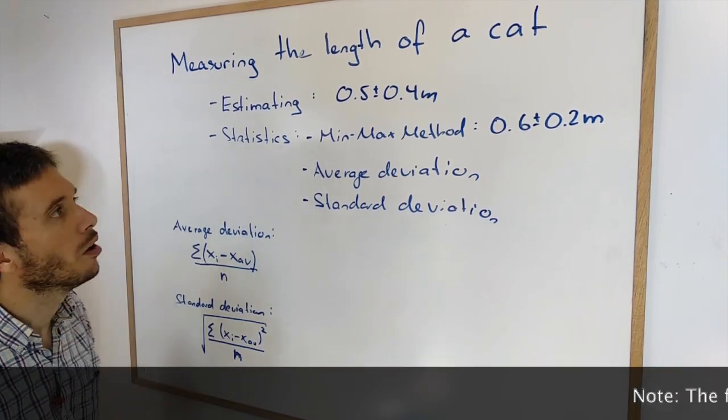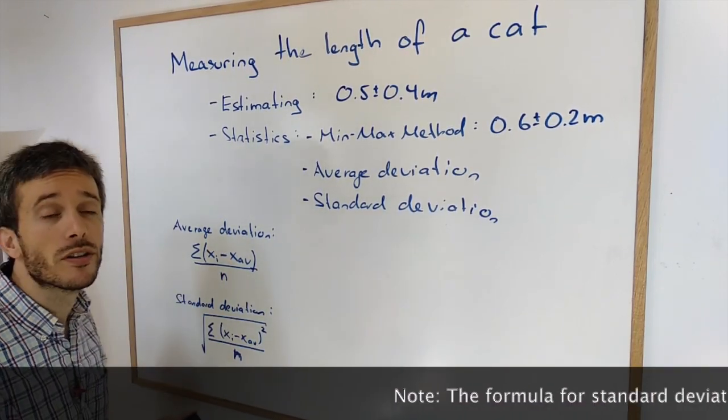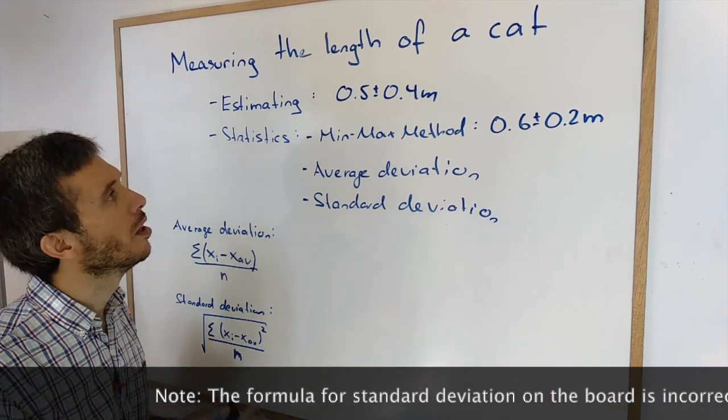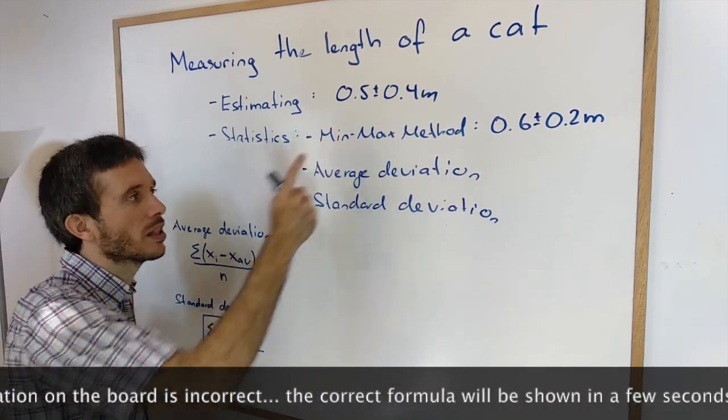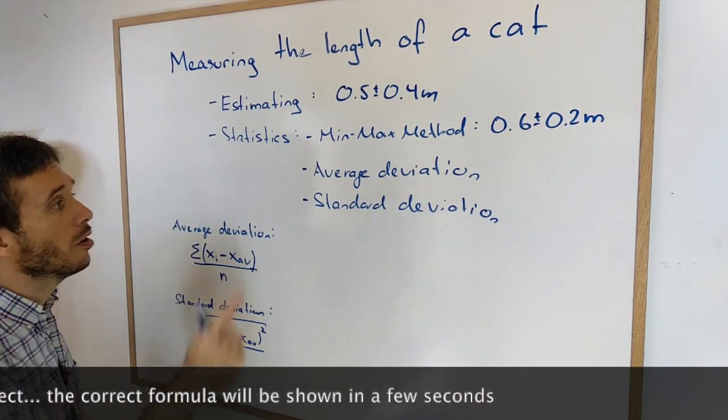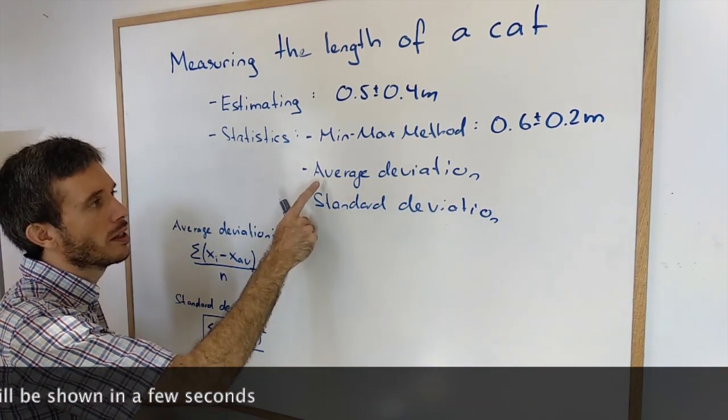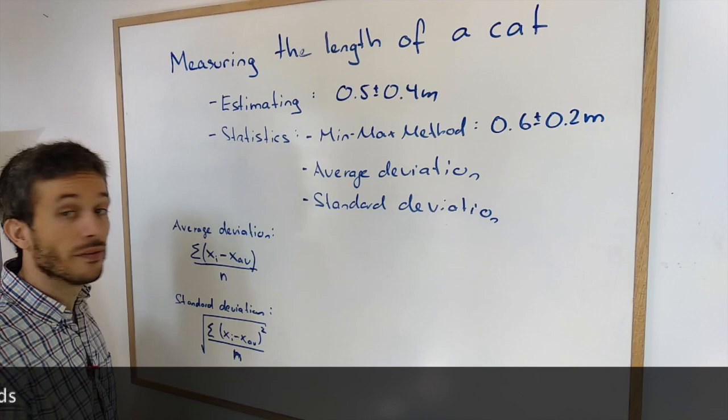This is the third video on estimating or figuring out the uncertainty of the length of a cat. We already did it by estimation and by using the min-max method. Now the other two methods that you can use from statistics are average and standard deviation.